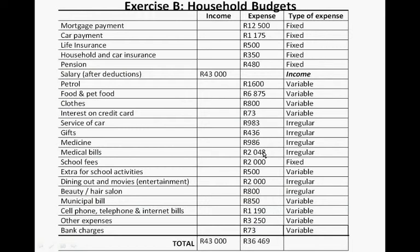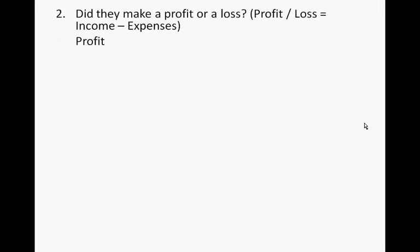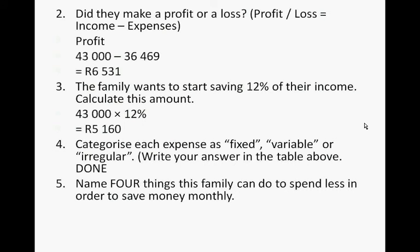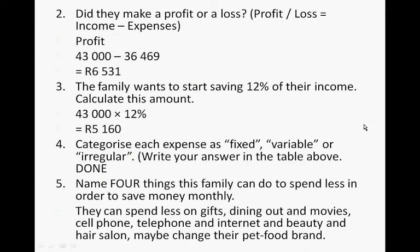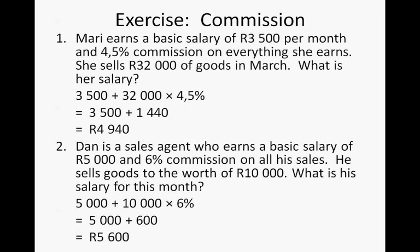The food and pet food spending is very high. You can't really budget for medical expenses — you're either ill or not. You could maybe take more vitamins or eat more fresh fruit and vegetables, but then the food bill will increase again. So the four things are: less on gifts, dining out, and so on.